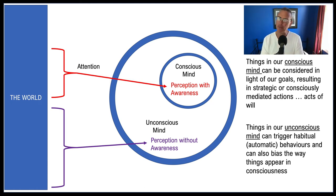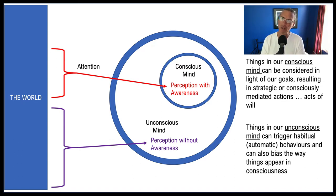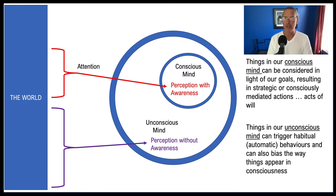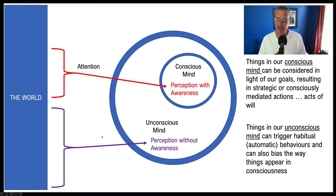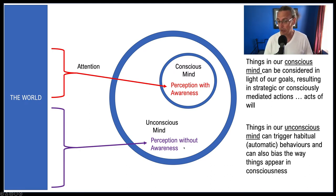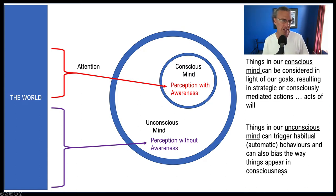Going back to this diagram, I made some claims and I want to give you a sense of what those claims are based on. The most interesting claims concern the unconscious mind — first, that we perceive things without our awareness, and second, that what we perceive without awareness can bias the way things appear in consciousness.